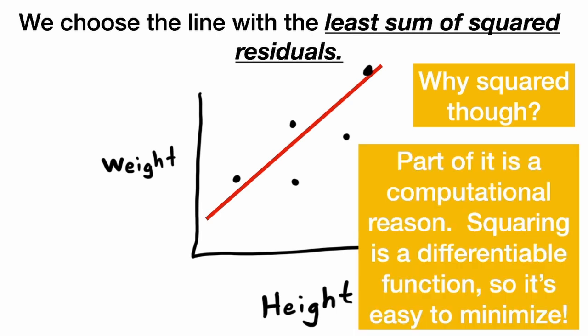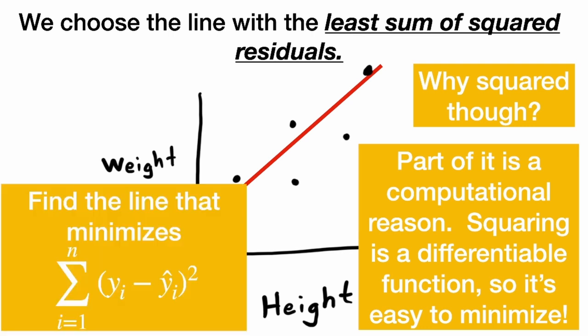Well, part of it is a computational reason. Squaring is a differentiable function. So it's easy to minimize. When we find the regression line, we search through all possible lines. And there are infinitely many lines we could draw through the data. And we want to find the line that minimizes the sum of the squared residuals.